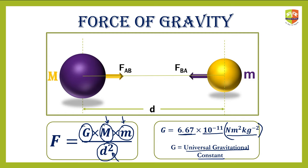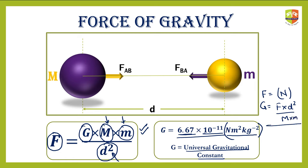Henry Cavendish was the first scientist to actually calculate the value of G, about 100 years after Newton. Now if the masses and the distance between their centers are known, we can calculate the force of attraction. G = 6.67 × 10⁻¹¹ with units of newton meter squared per kilogram squared. This unit is easily derivable: since F = GMm/d², we get G = F·d²/(Mm), so the unit is newton·m²/kg². Keep this in mind.